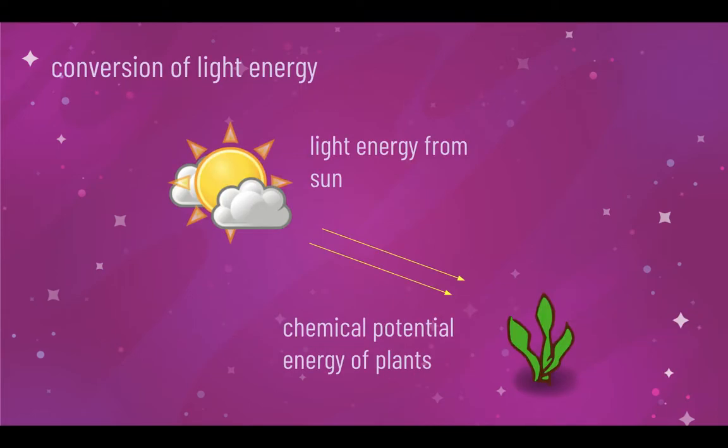Here's an application of the conversion of light energy. The light energy of the sun is being converted to chemical potential energy of plants, as plants use the sunlight to make food.